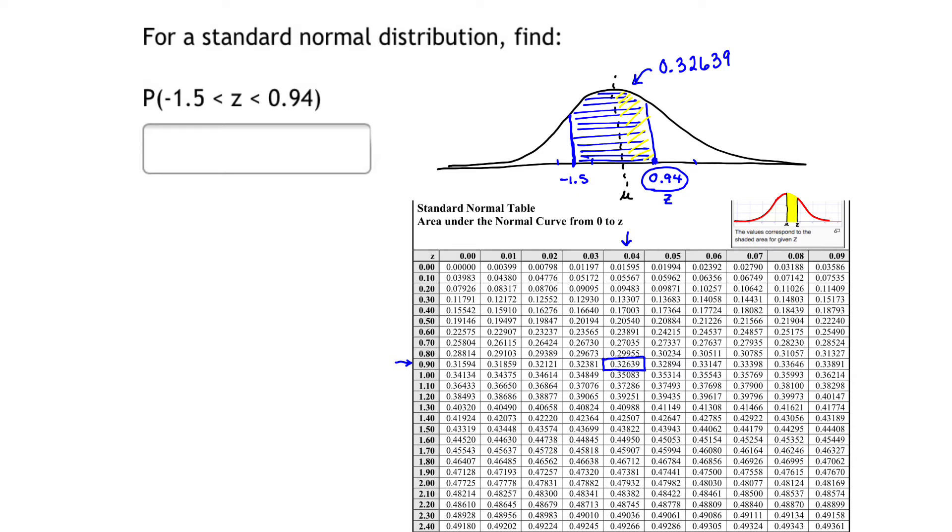Now we're going to look at the other side. We're going to take the band on the left side of the mean. We want to calculate the area that corresponds to that band. The z value we're looking at this time is -1.5.